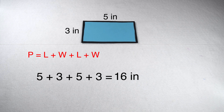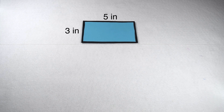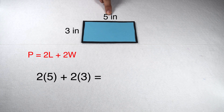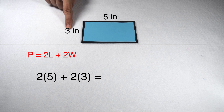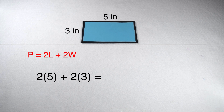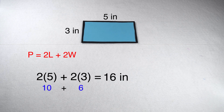If all of our methods are the same, they should all give us the same result. So let's compare that to: perimeter is twice the length plus twice the width. This means I would need to multiply 2 times 5, multiply 2 times 3, and add those values together. 2 times 5 is 10, 2 times 3 is 6, and 10 plus 6 gives me 16, so this also gives me a perimeter of 16 inches.